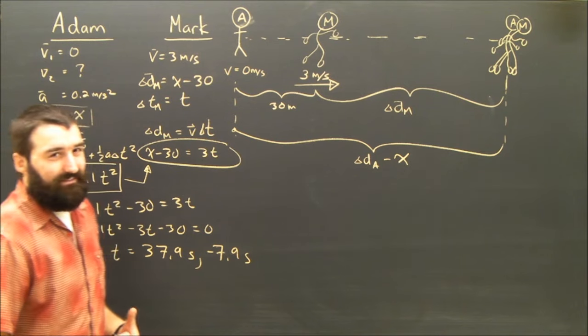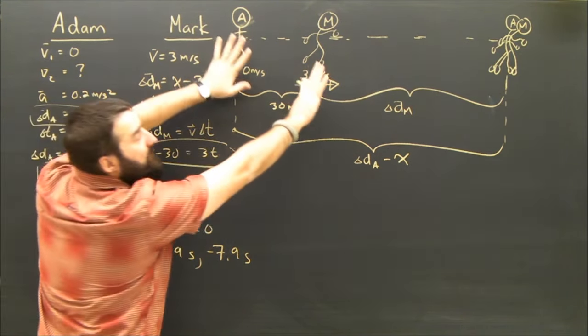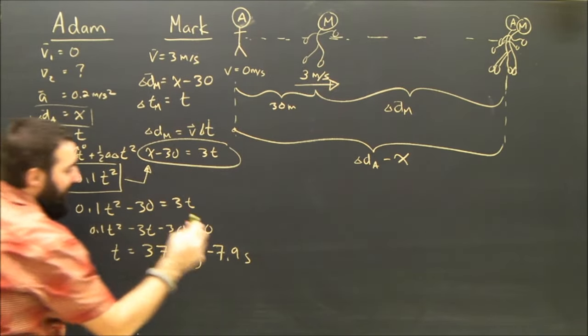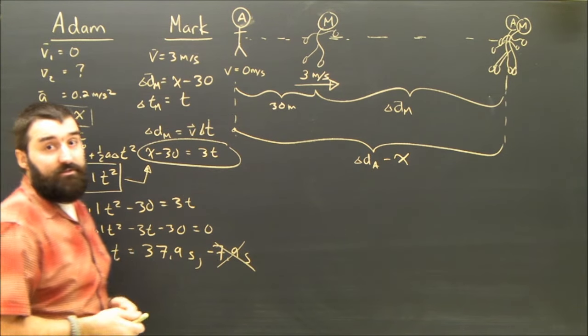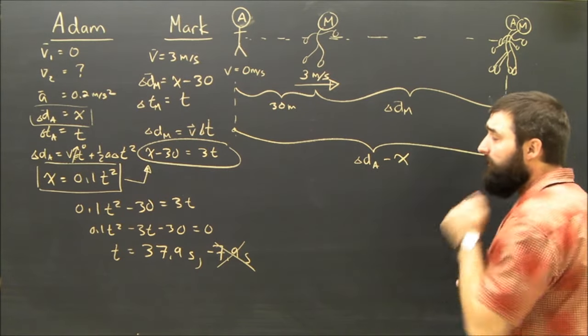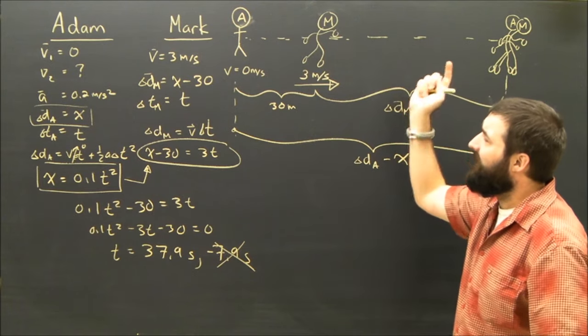Negative 7.9 seconds? Obviously, that doesn't make a lot of sense. But it means if we took this and backed it up backwards in time, that's when we'd meet again. But it's nonsense as far as this question is concerned, so we're just going to stick with the 37.9. That means it took Adam 37.9 seconds to catch Mark.